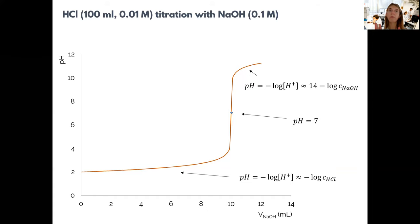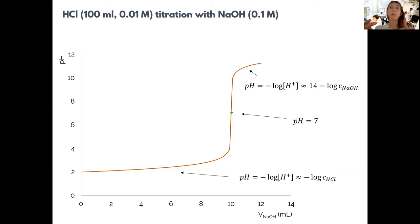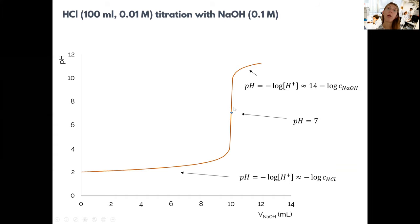The important stoichiometric point in this titration is where hydrochloric acid has fully reacted with sodium hydroxide — where the moles of hydrochloric acid in solution equal the moles of sodium hydroxide added during titration. Determining this point as accurately as possible is very important. In acid-base titration we use indicators to find this point. Also very important is the steepness of the titration curve — how fast the pH changes when approaching the stoichiometric point — and we will examine this during the lecture.